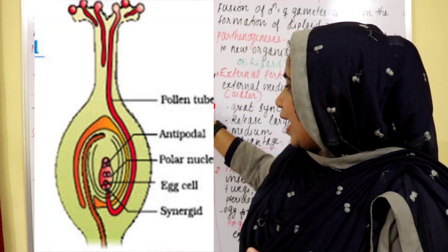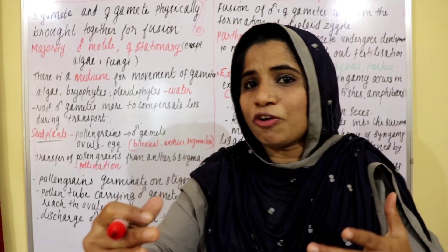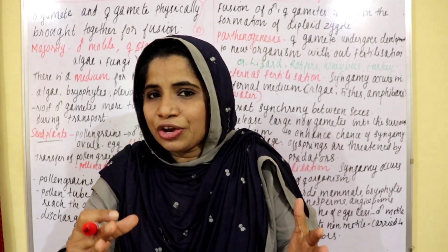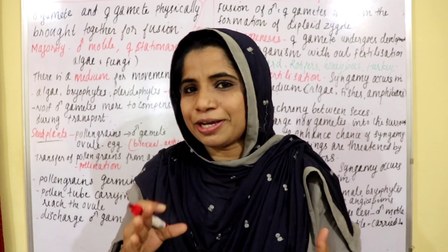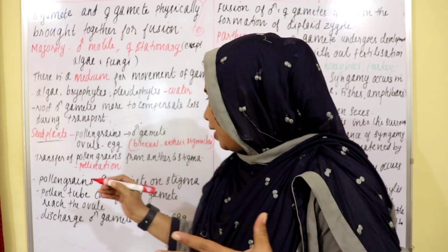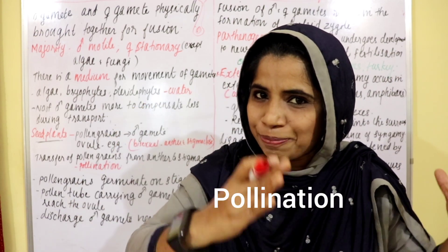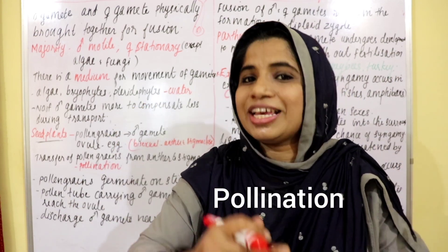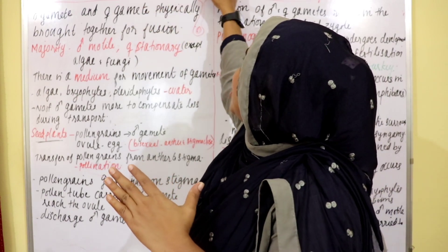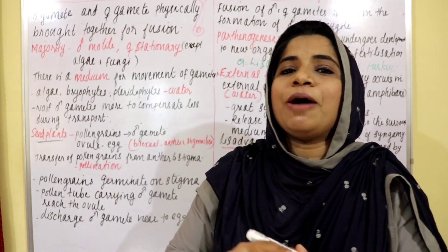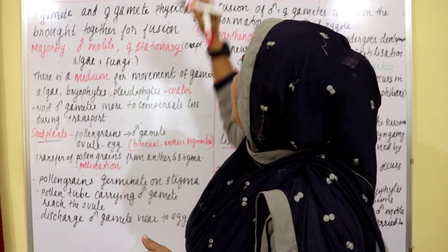If you look at angiosperms, it involves a transfer of pollen grains from the anther to the stigma. This process is called pollination — the transfer of pollen grains from the anther to the stigma.